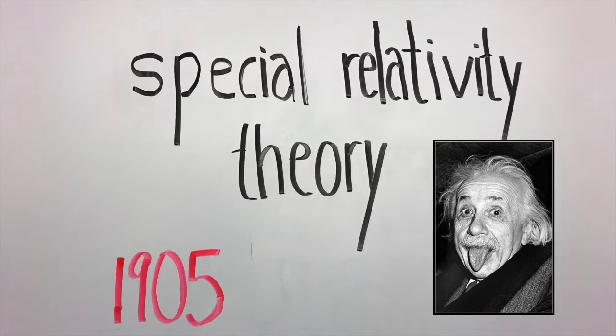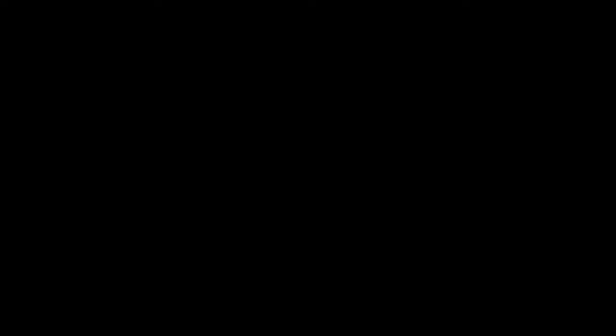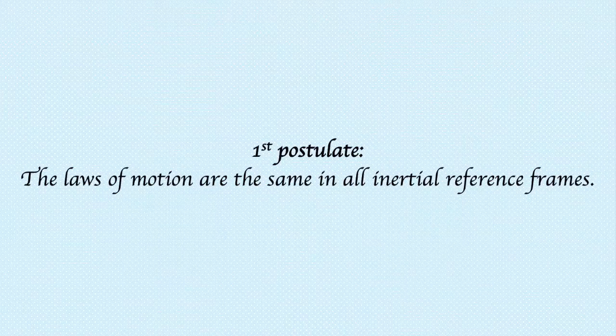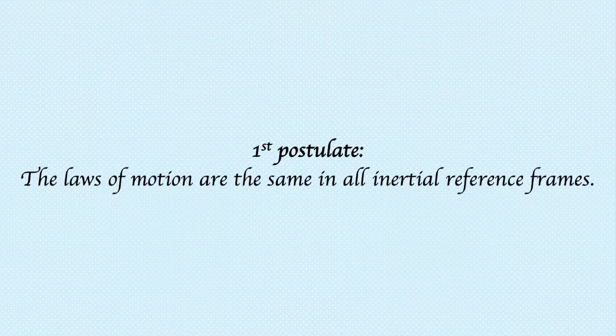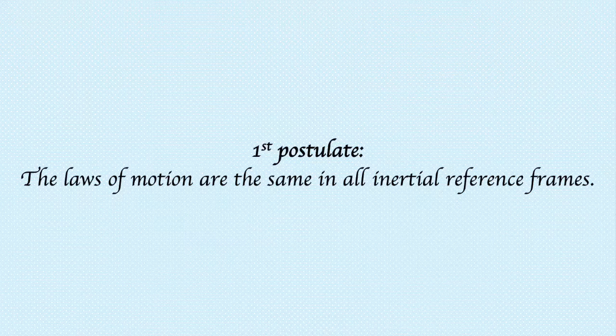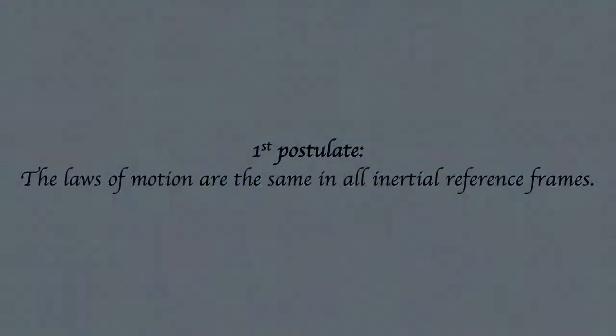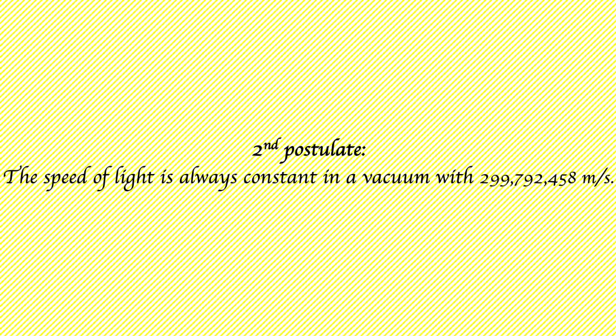This theory states two main postulates. The first postulate declares that the laws of motion are the same in all inertial reference frames. The second postulate affirms that the speed of light is always constant in a vacuum with 300 million meters per second.